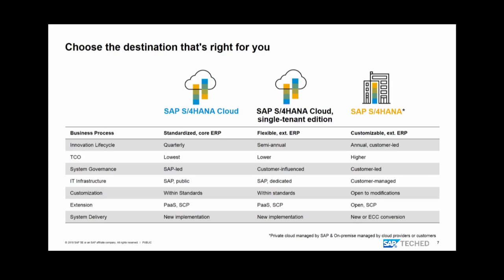From the same code line and the same functionality, there are differences in business scope. With SAP S/4HANA Cloud, you have a smaller business scope than with an SAP S/4HANA On-Premise system. Business processes are much more standardized in the cloud — you're running only on a core ERP system — whereas in S/4HANA On-Premise or Single Tenant Edition, you have much more flexibility, more degrees of freedom to customize the application, add additional code, and adapt the system to your needs.